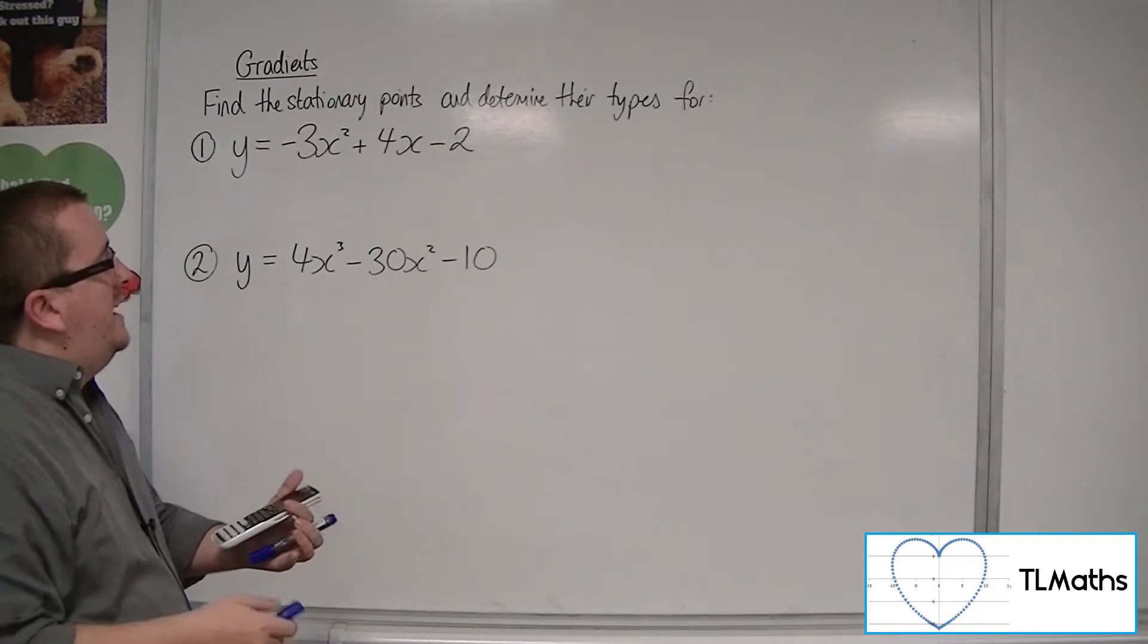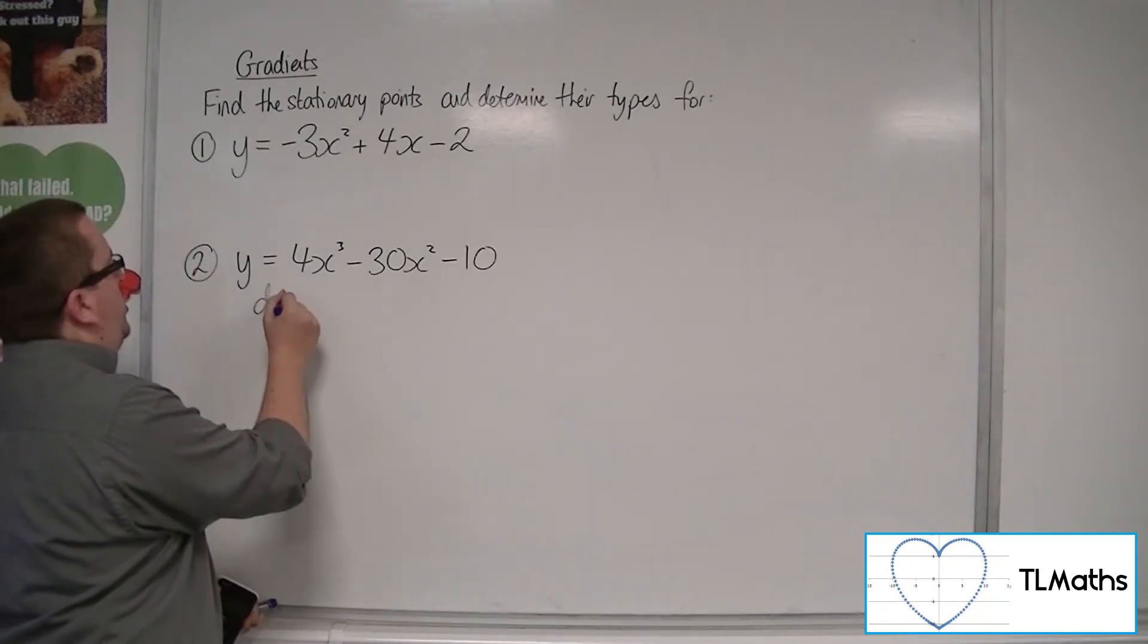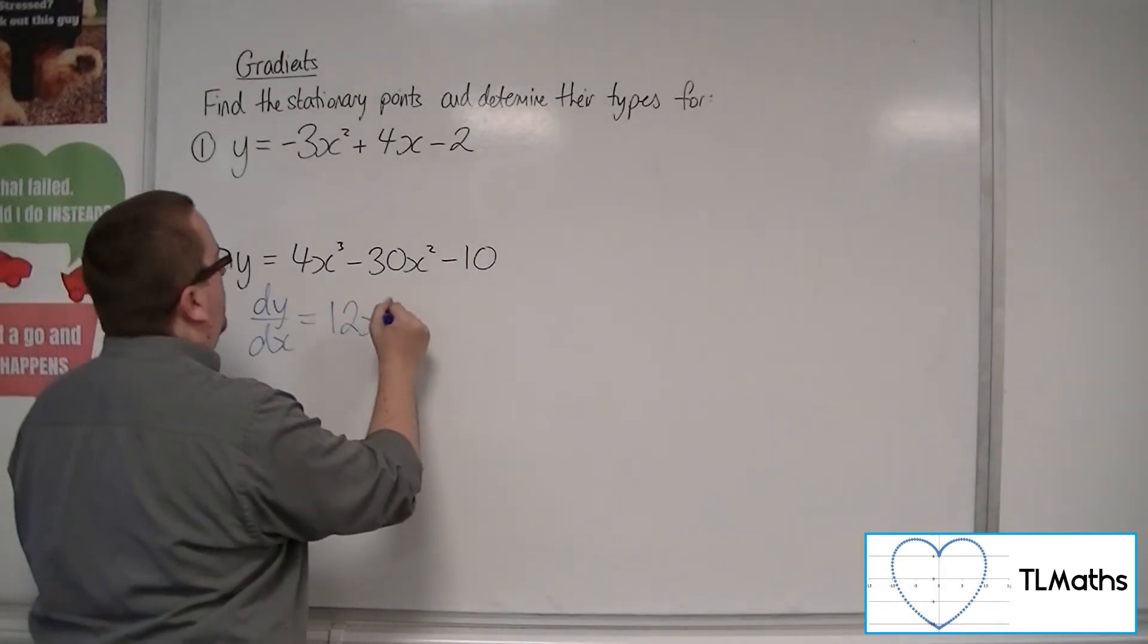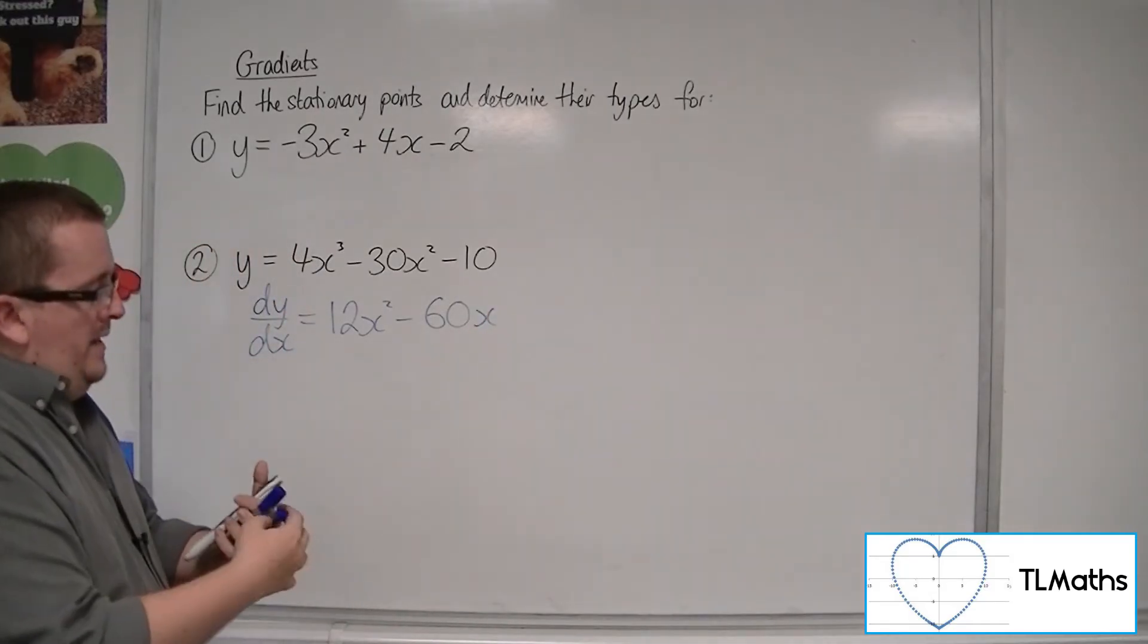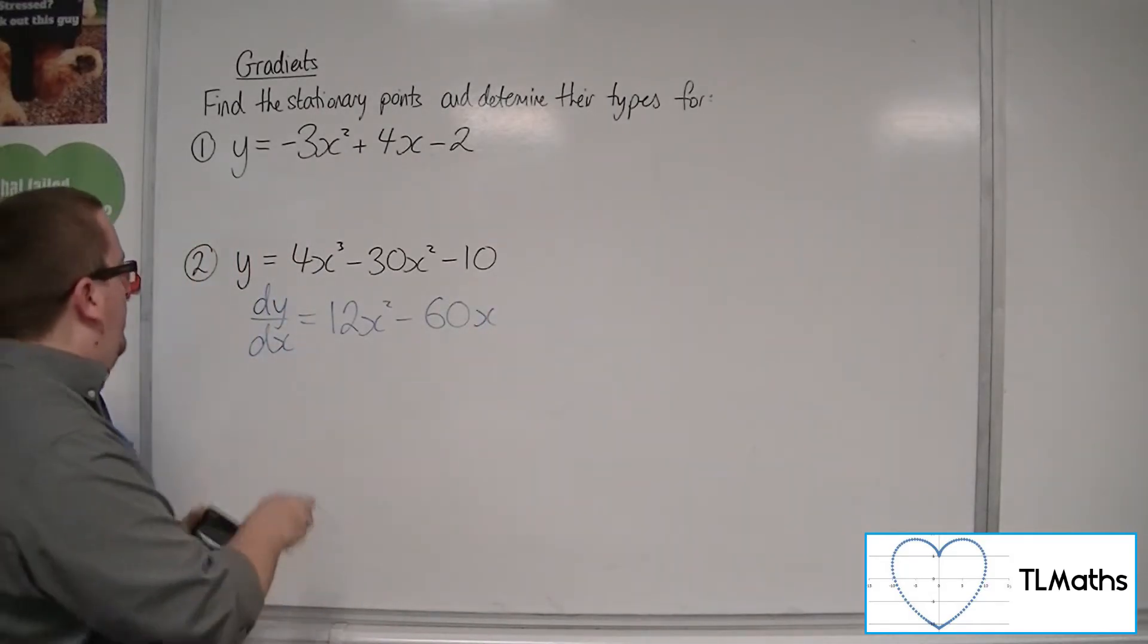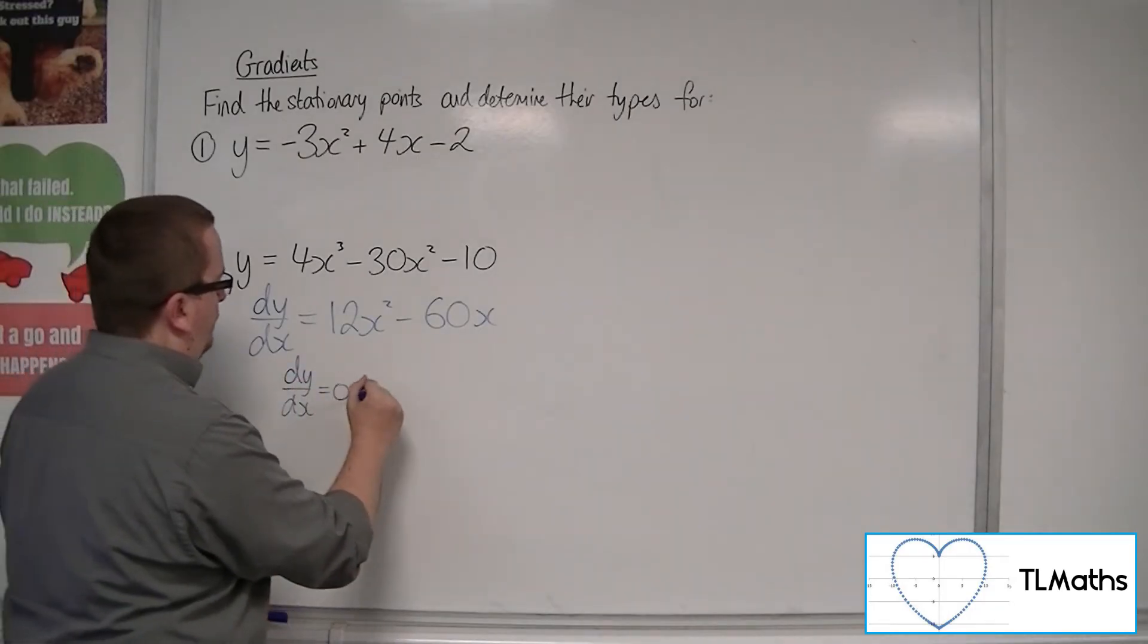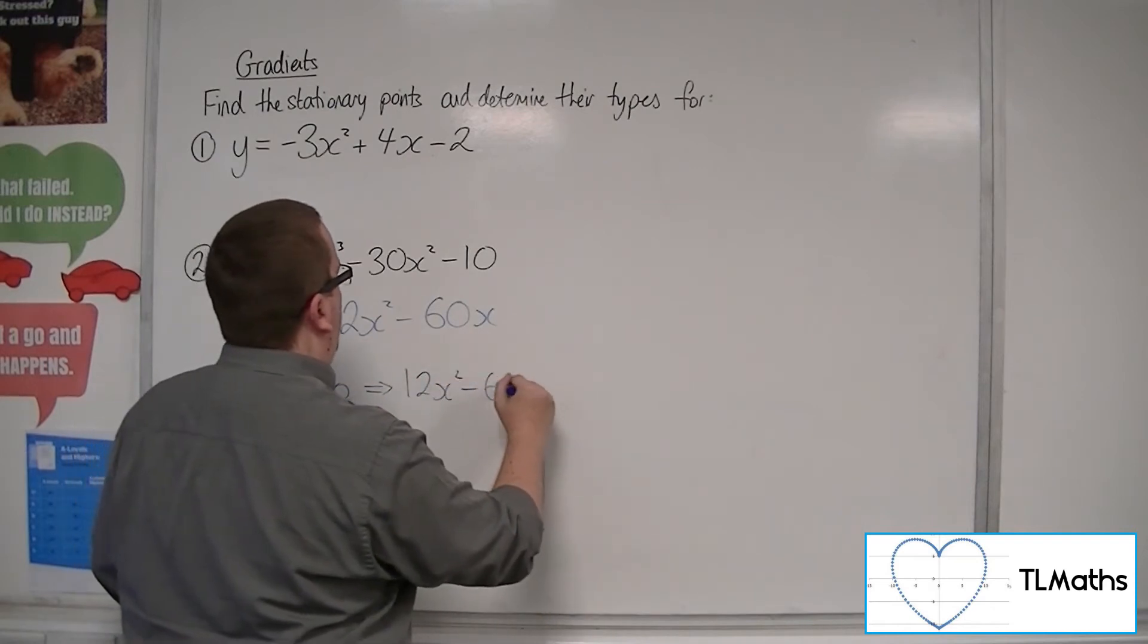So for number 2, y equals 4x cubed minus 30x squared minus 10. First thing to do is to differentiate dy by dx. And we're going to get 12x squared take away 60x. Now, the stationary points exist when dy by dx is 0.